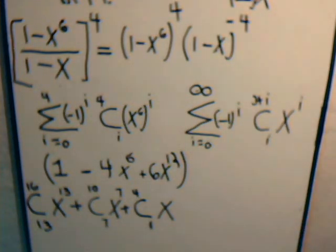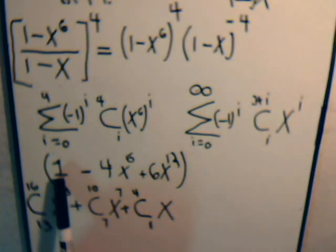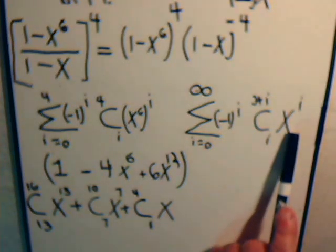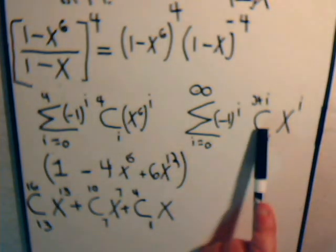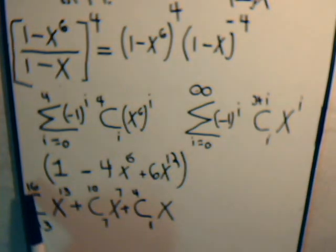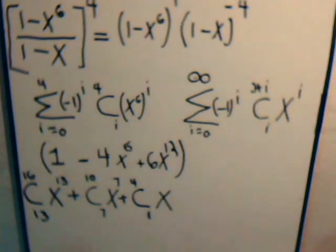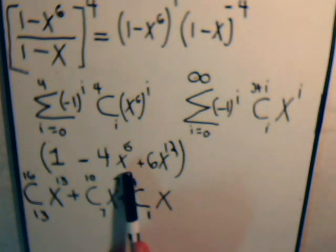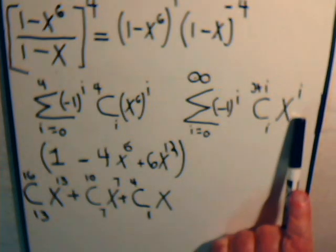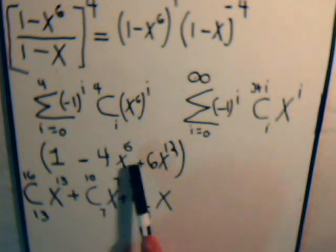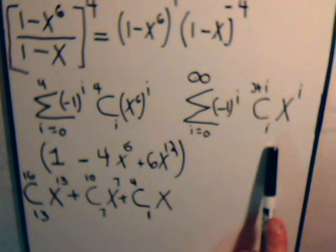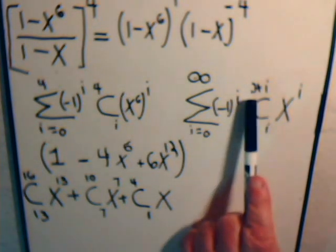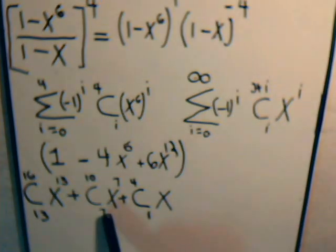So for example 1 times x to the 13th would be x to the 13th. So i equals 13. This binomial coefficient is C16 over C13. Here we have x to the 6th. Multiply that by x to the 7th and that will give us x to the 13th. That binomial coefficient then i is 7 so that's 10. So we have this.